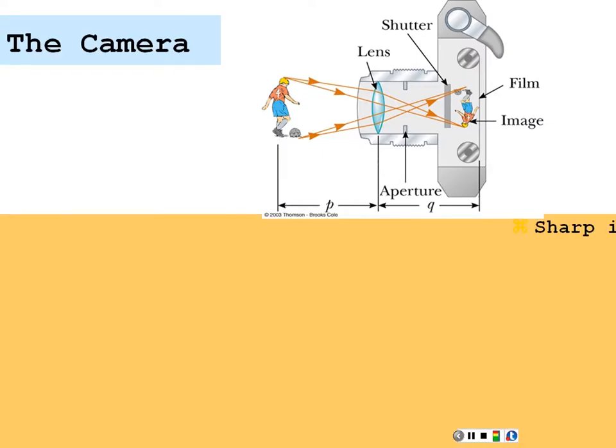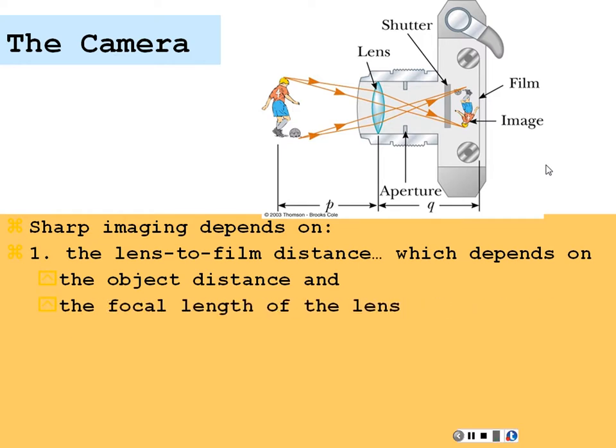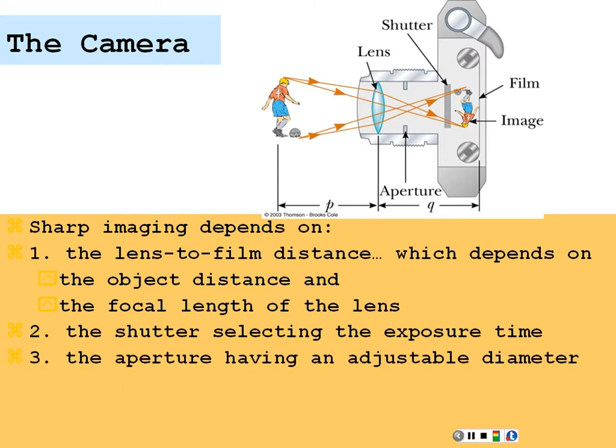The camera, here's an old style camera, where you have a lens, aperture, object distance, image distance, a film to form the image. To get a sharp imaging depends on your lens to film distance, which in turn depends on the object distance and the focal length of the lens. Depends on the shutter, selecting the exposure time. More exposure time will give you more light. The aperture, having an adjustable diameter, adjusting more size to the aperture will also give you more light. Maybe you don't want more light. Maybe you want more resolution to your image or more definition to your image. So that's something you have to adjust.